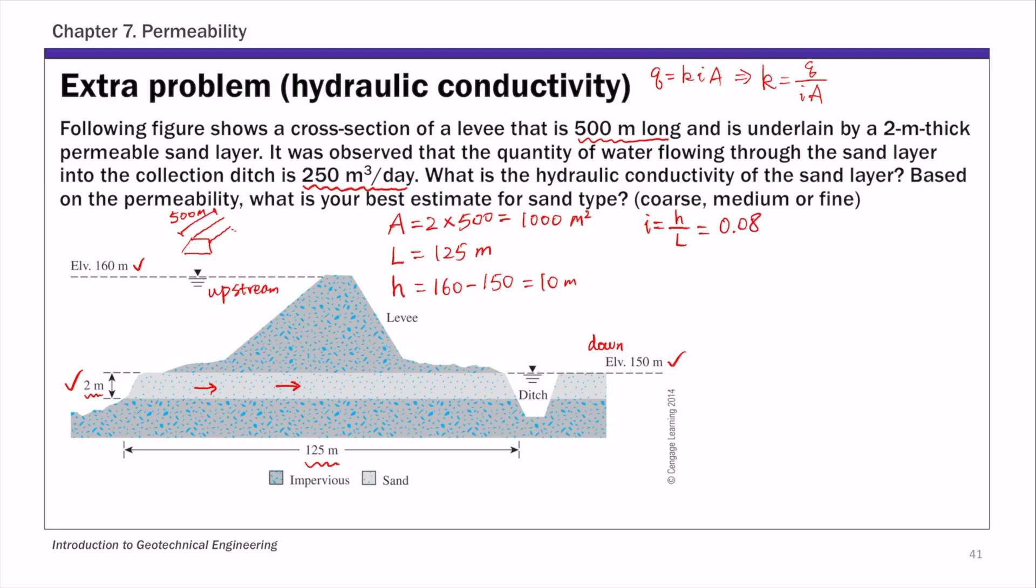We can calculate the hydraulic conductivity k. That's q over ia, which is 250 over 0.08 times 1,000. The unit you get out of this is meters per day, so 3.125 meters per day.